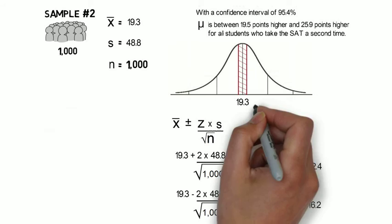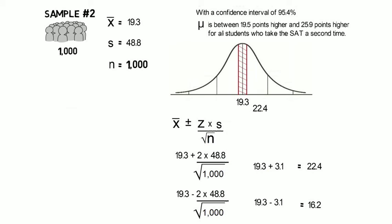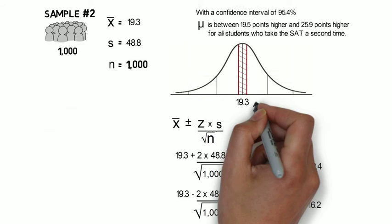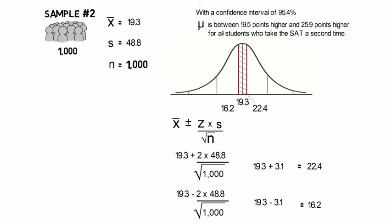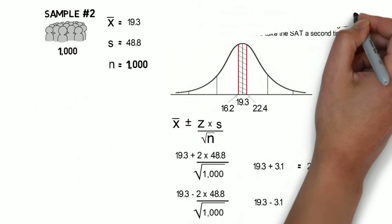Now notice, we have a different mean, we have a different upper bound, 22.4, we have a different lower bound, 16.2. But we can still say, because of the way we did our sample, with a confidence interval of 95.4%.